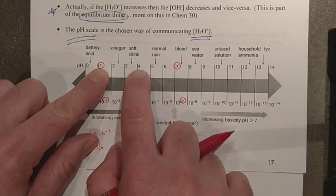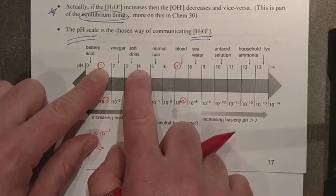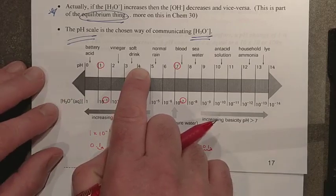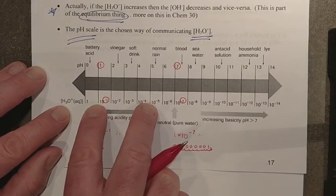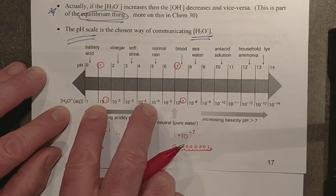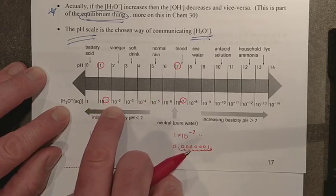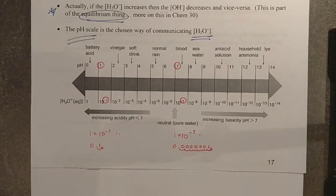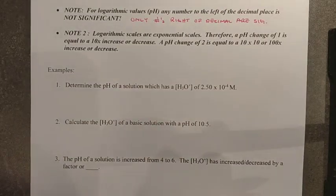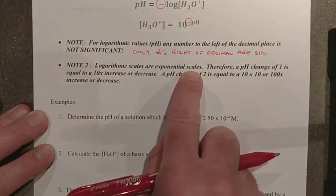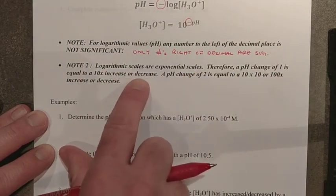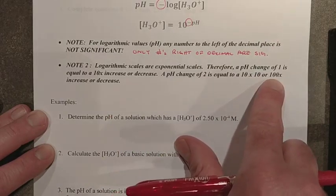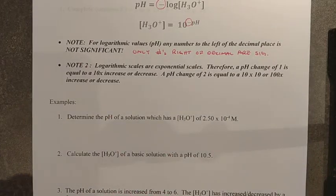To go from pH 1 to pH 4 would be a factor of 10 change three times — 10 times 10 times 10, or a factor change of 1,000. Looking at the exponents: starting at 10 to the negative 1, which is fairly concentrated, and going to 10 to the negative 4, you're decreasing by 10 times, 10 times, 10 times, 10 times — decreasing hydronium ion concentration by 1,000 times. A pH change of 1 equals a 10-times increase or decrease; a pH change of 2 equals a 100-times change. This is all base 10 and exponential.